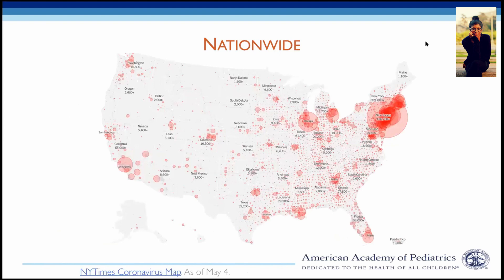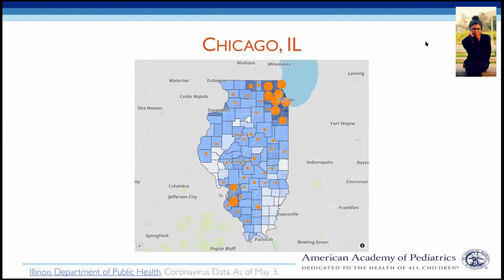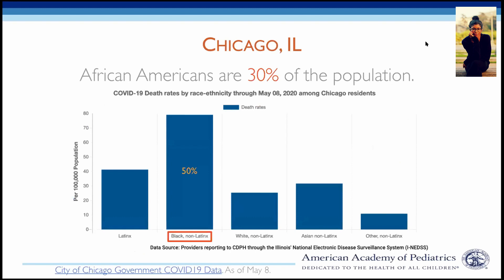The U.S. epicenter of the COVID-19 pandemic is New York, and most specifically New York City, where African Americans and Latinx populations have the highest rates of cases, hospitalizations, and deaths. Moving to the Midwest, Chicago is the epicenter in Illinois, and despite being only 30 percent of the population, African Americans represent 50 percent of COVID-related deaths — the highest death rate of any group in the city.